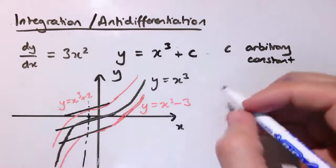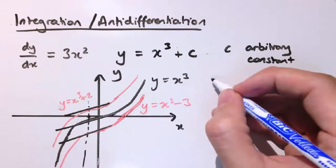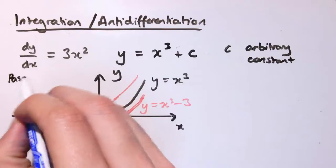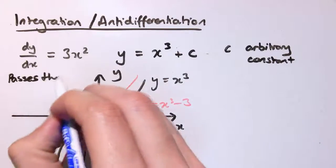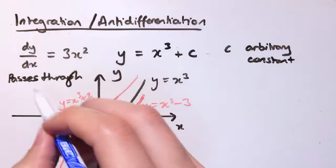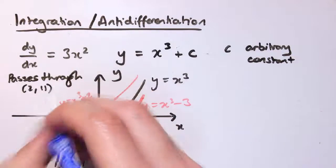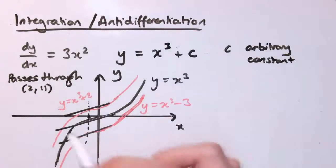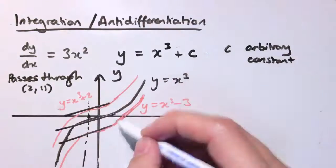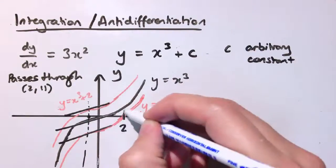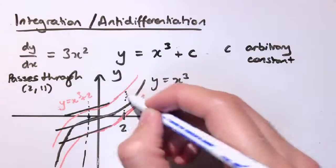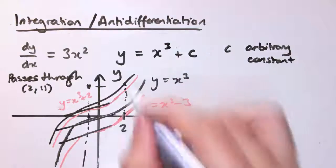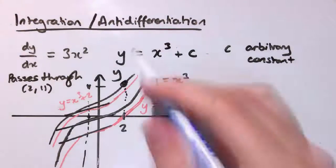But let's say, for example, if I also knew, as well as this bit of information here, that the curve that I'm looking for passes through a given point, so let's say we know it passes through the point (2,11), then we could work out precisely which of these curves it is, because I know it's of this form y=x³, and it's the one that if I go to x=2, I get to y=11, so it's the curve that's going to go through that point, in this family of curves.